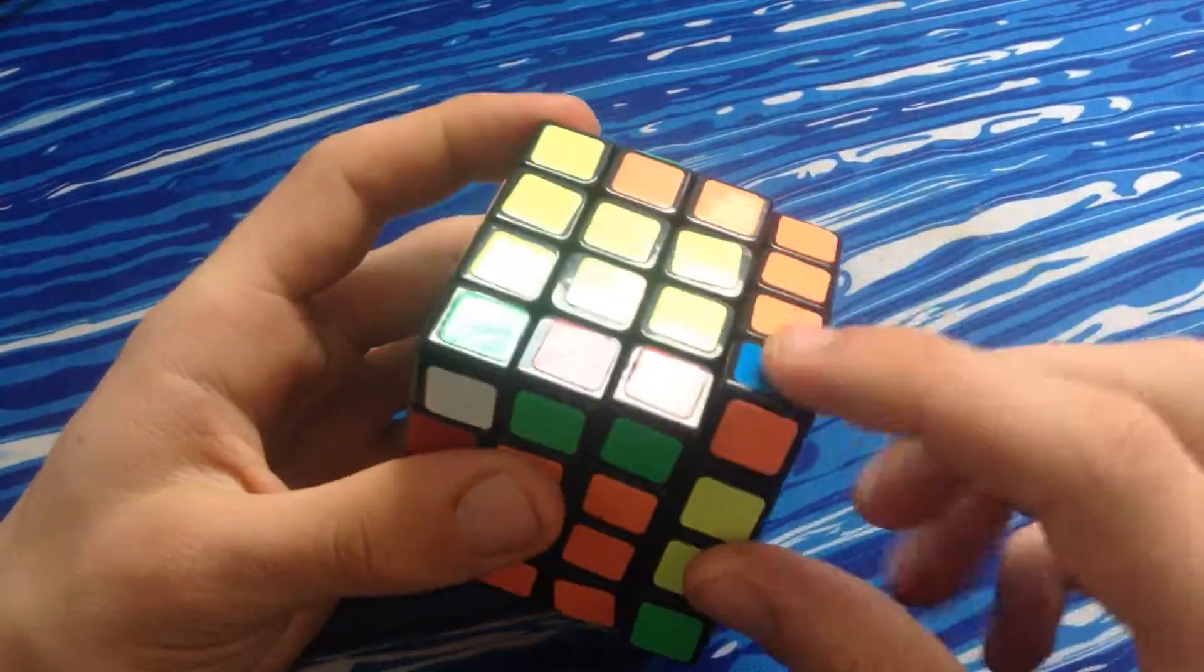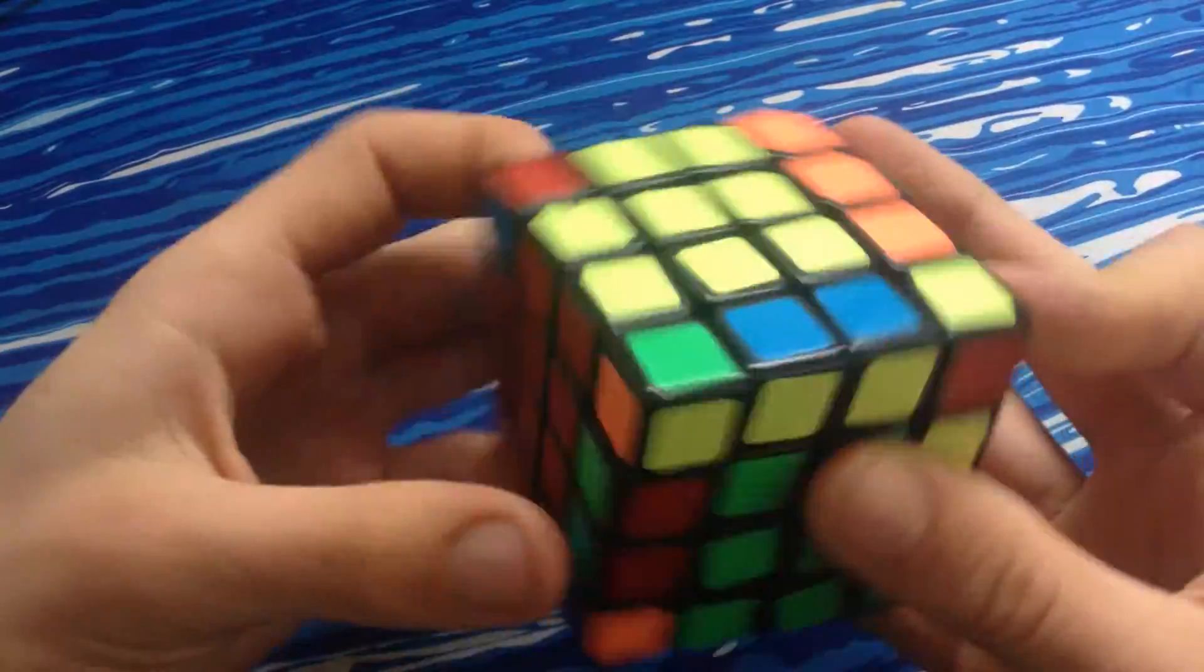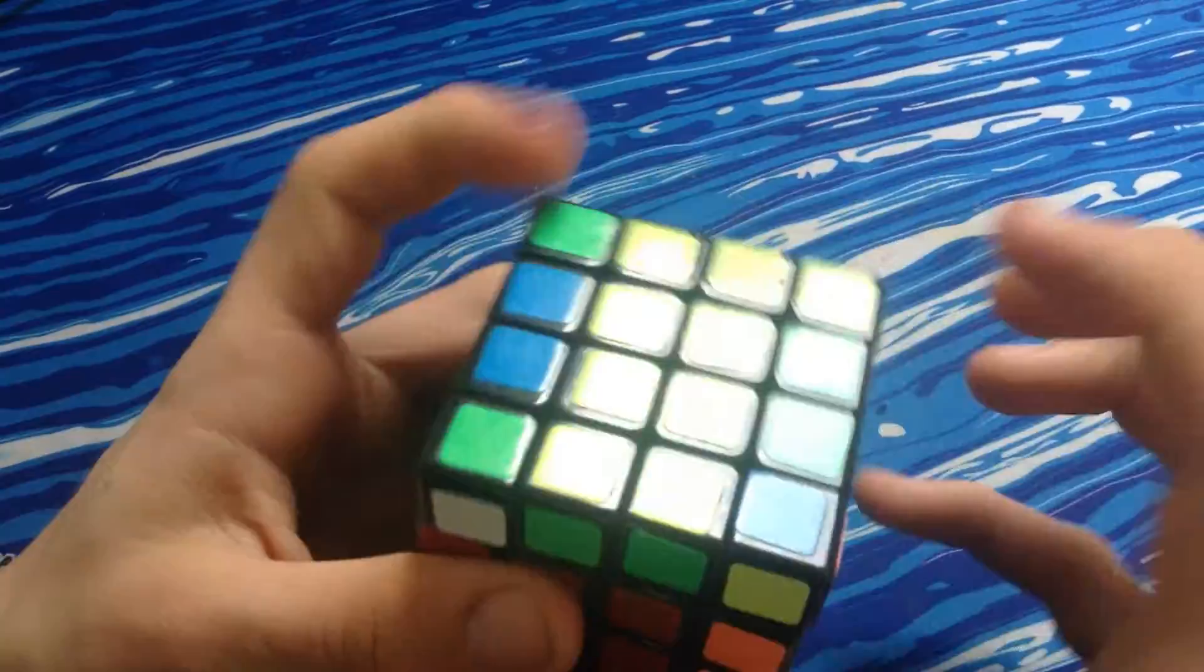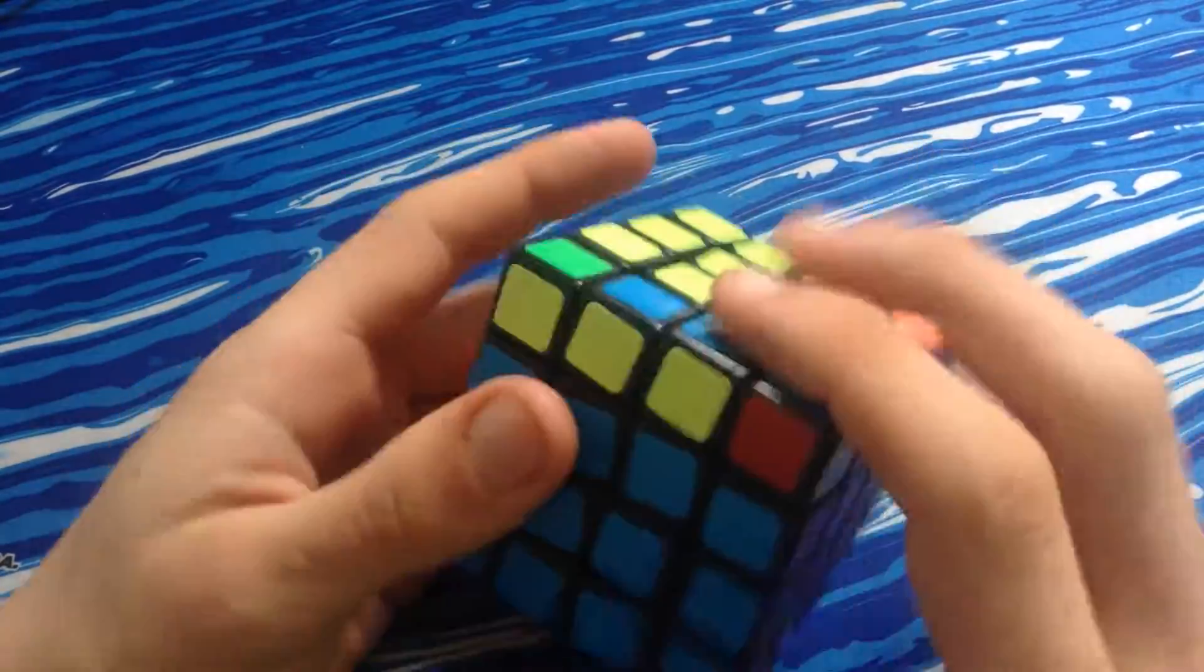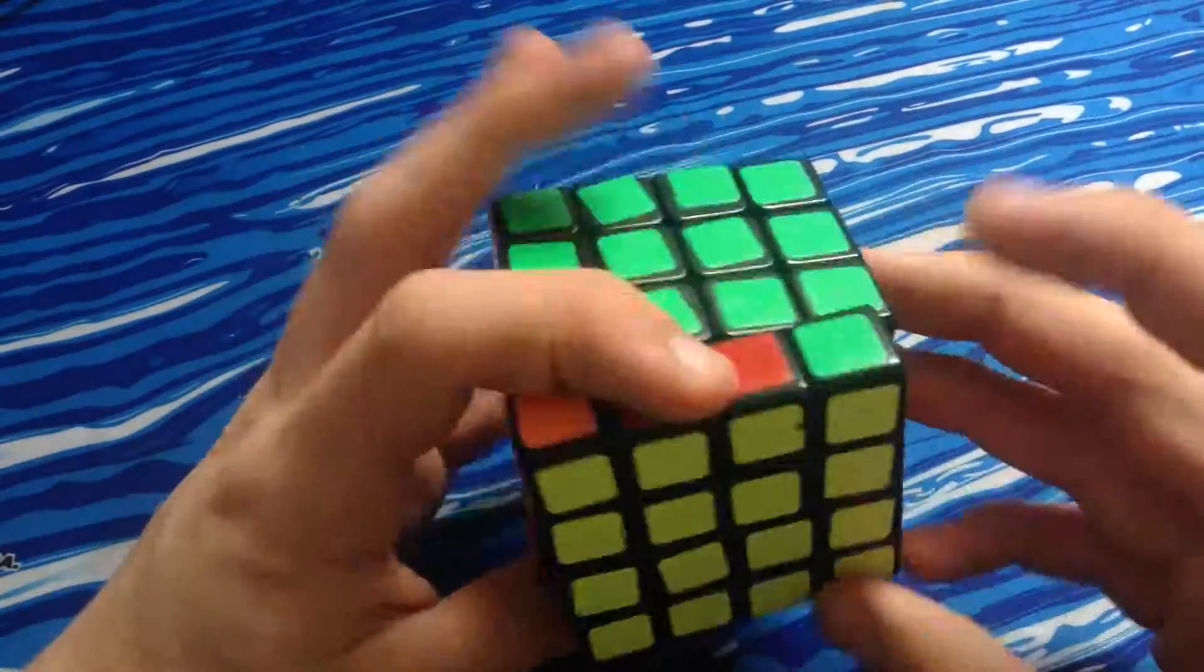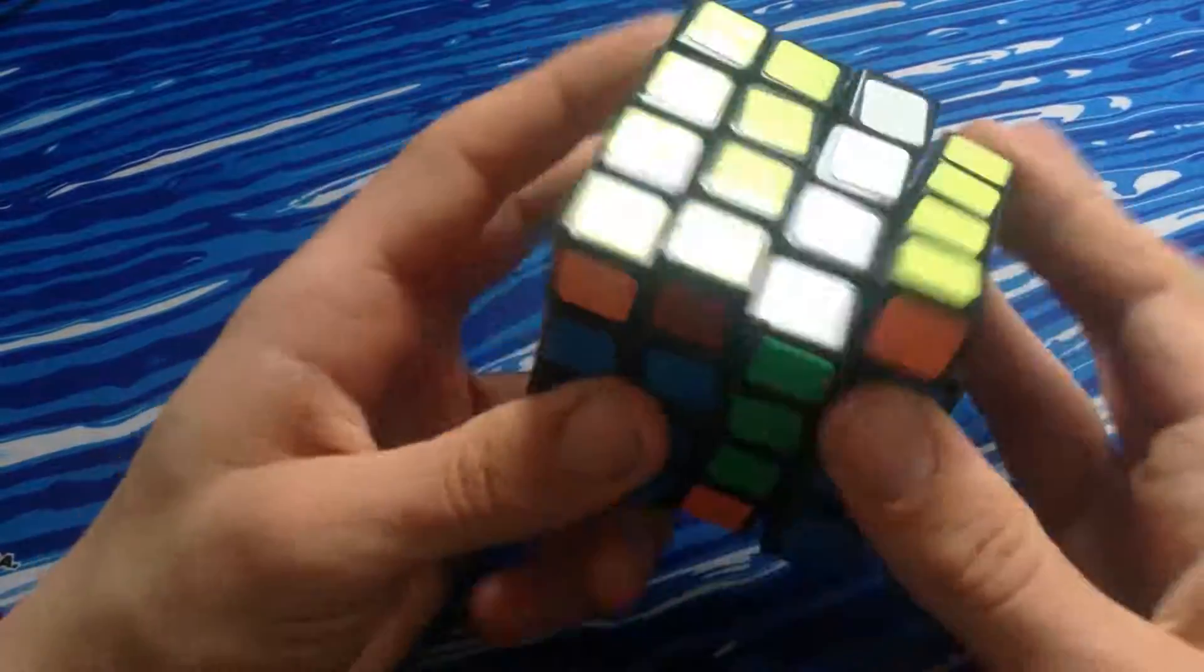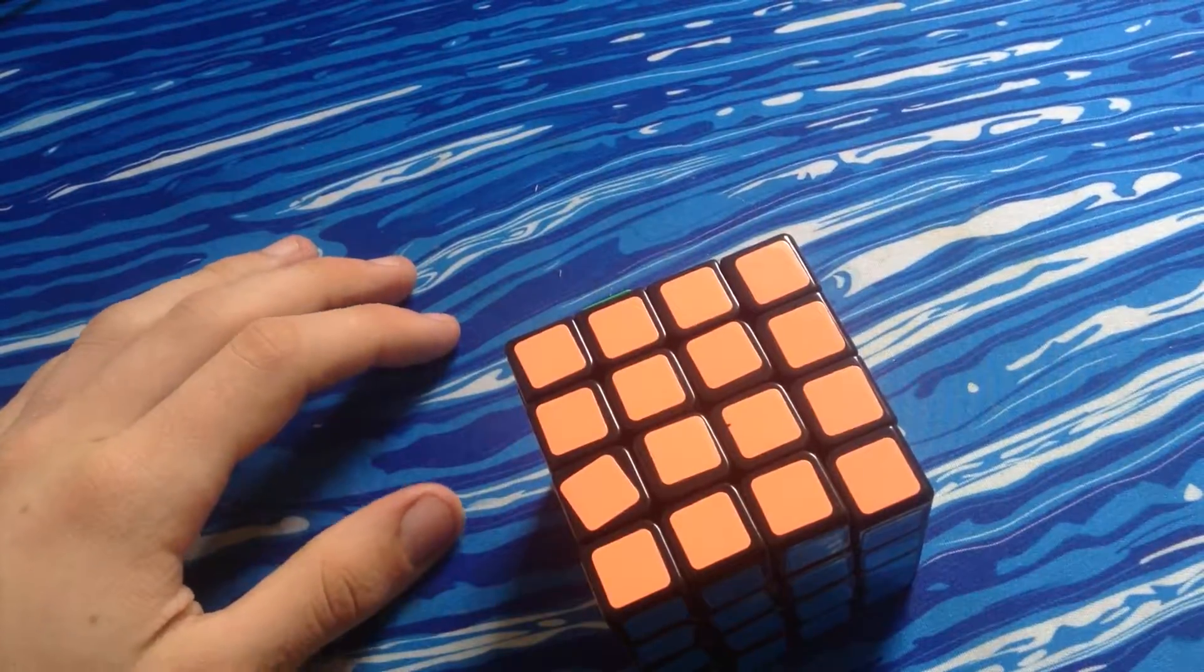Solve the red-blue F2L pair. And I think I could get, no, I'm not going to get parity. Oh well, parity. No I will. I'm an idiot. And then I get OLL parity. Solve the case I got. And now I've got PLL parity as well, so I've got double parity.